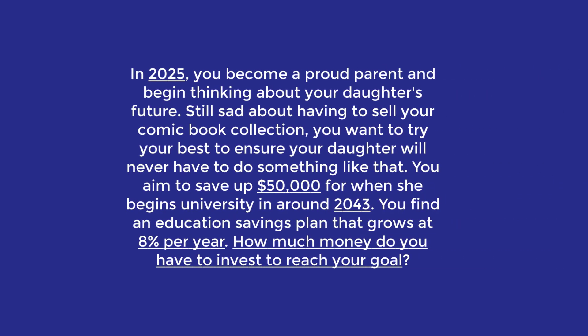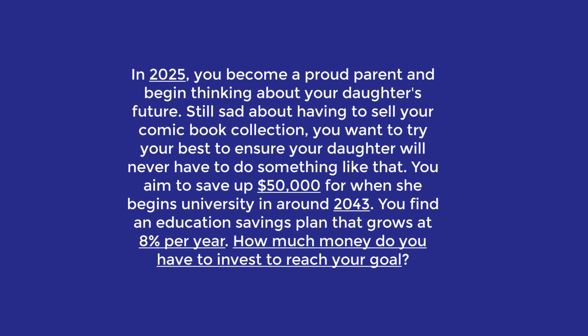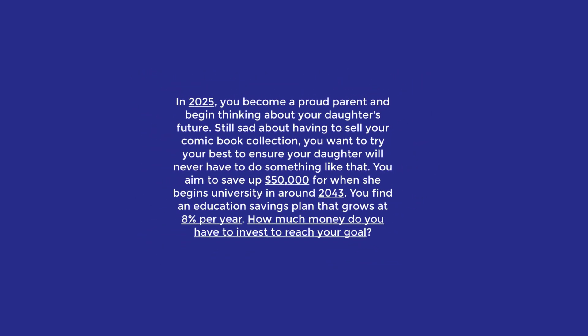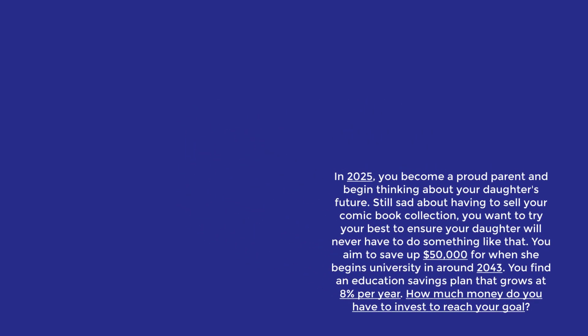Let's move on to the second question. In 2025, you become a proud parent and begin thinking about your daughter's future. Still sad about having to sell your comic book collection, you want to ensure your daughter will never have to do something like that. You aim to save up $50,000 for when she begins university in around 2043. You find an education savings plan that grows at 8% per year. How much money do you have to invest to reach your goal?